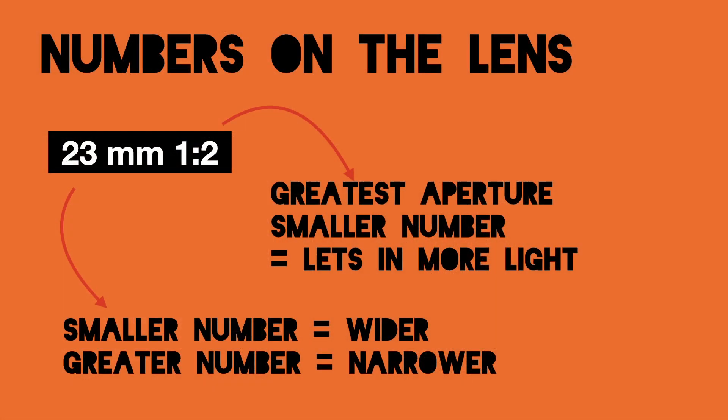The next number tells about the aperture — how much light the lens lets in. And it's a little bit counterintuitive, because the smaller the number, the more light you get in.